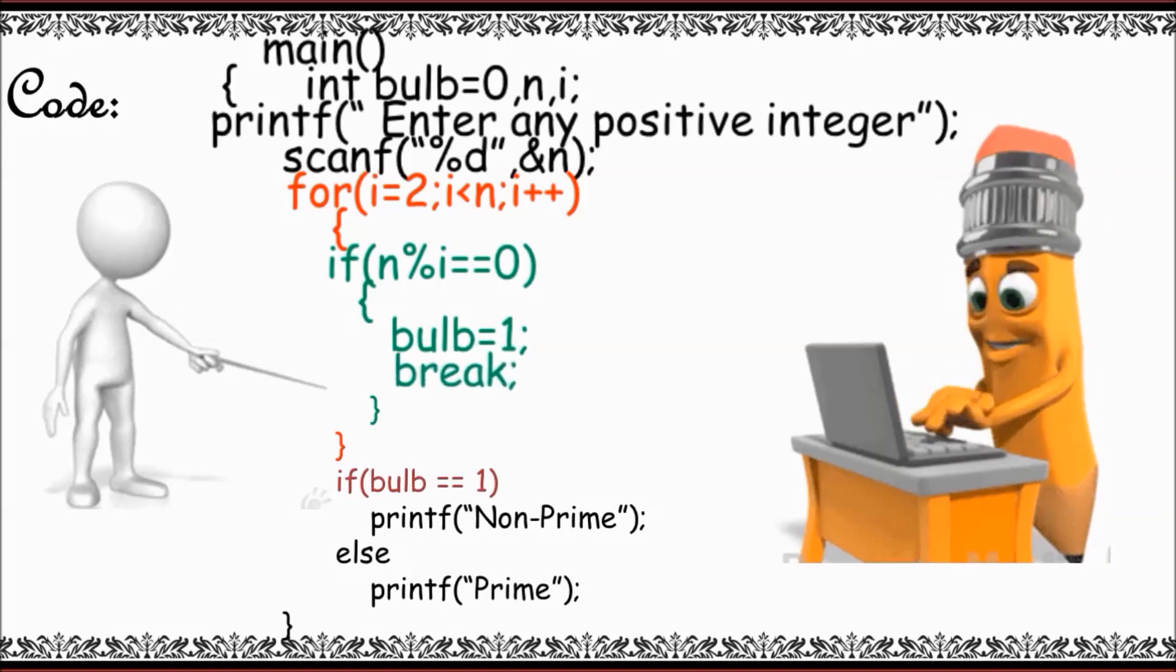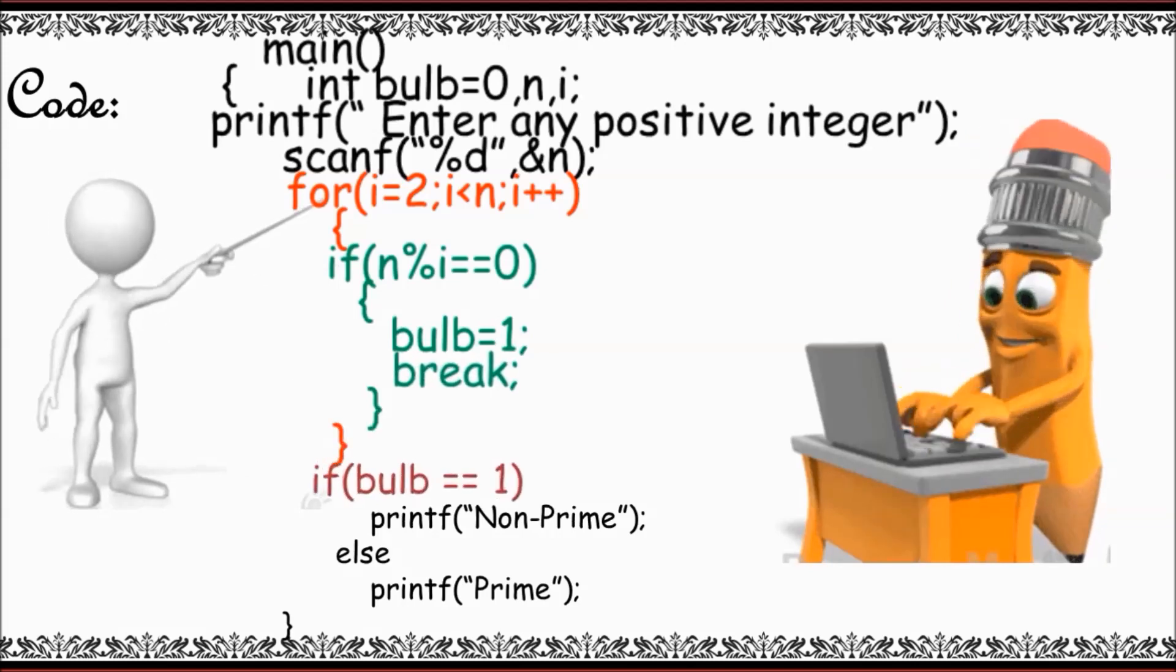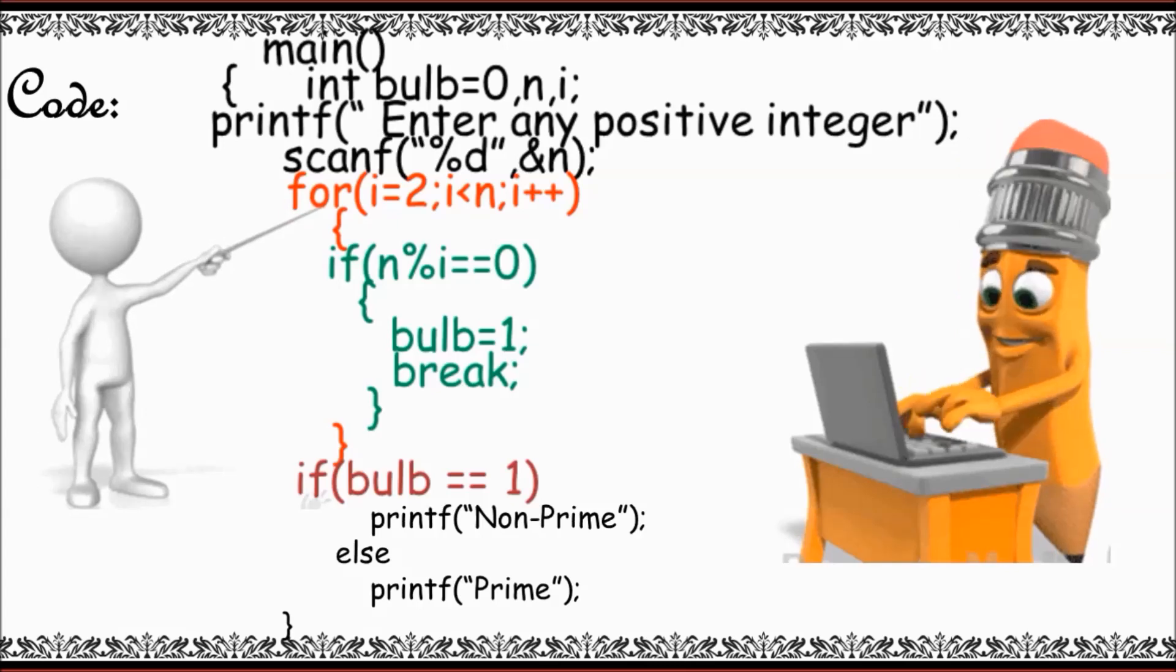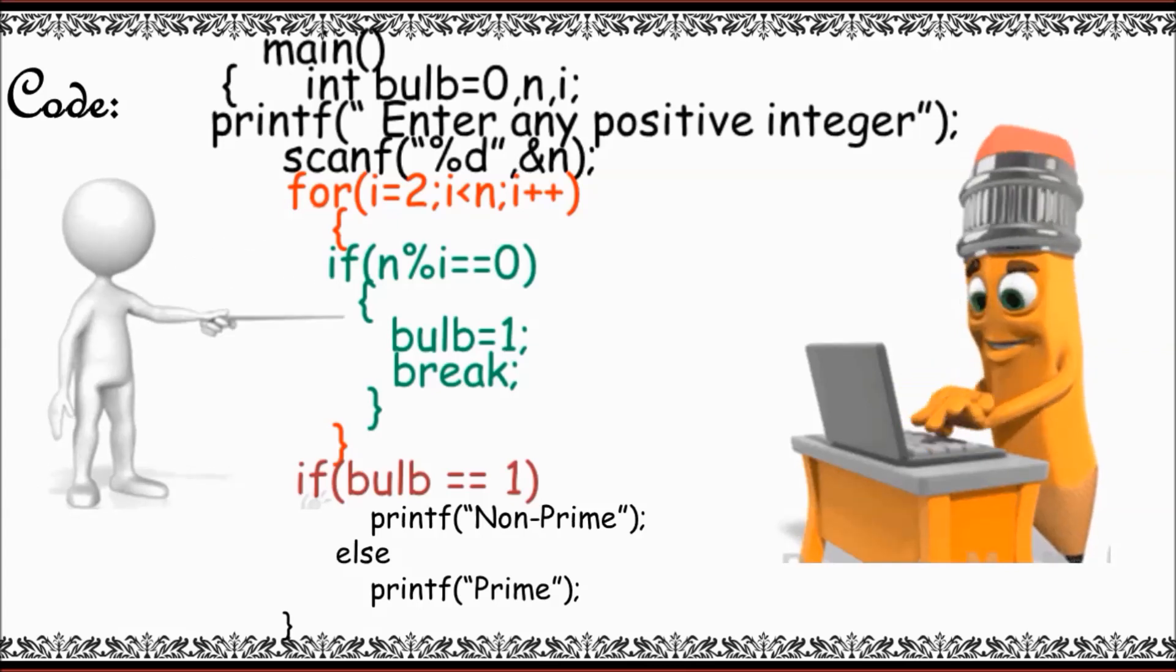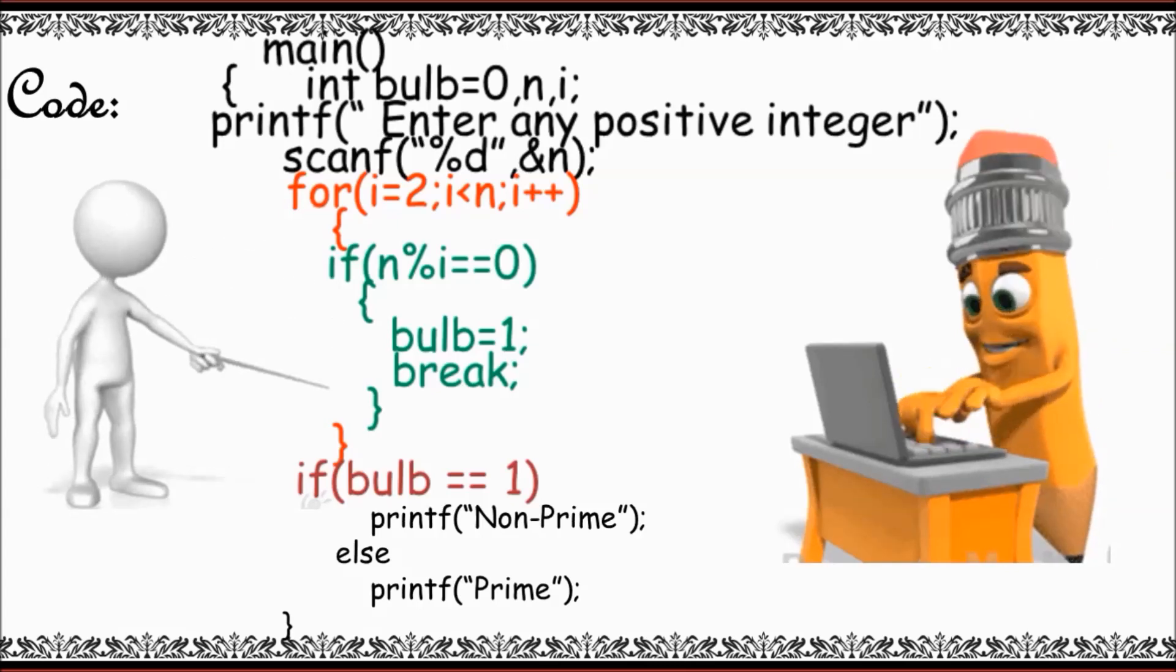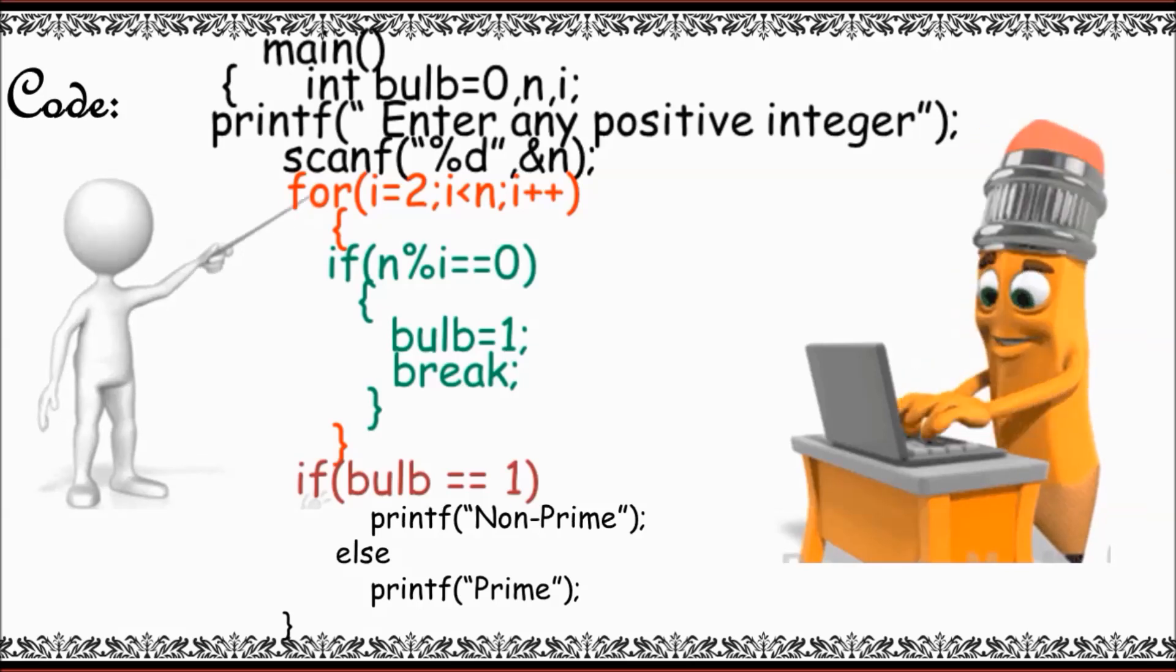On completing the entire loop, if the bulb holds the value of 1, you can say that the number is non-prime. If the bulb holds the value of 0, then it is prime.